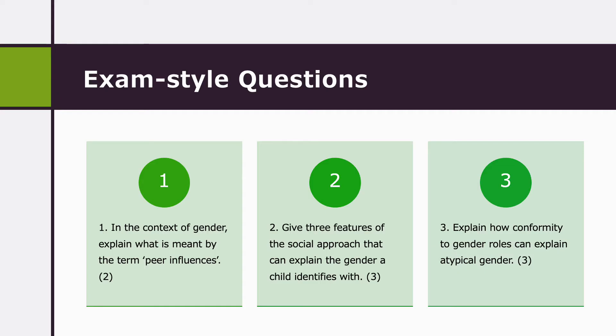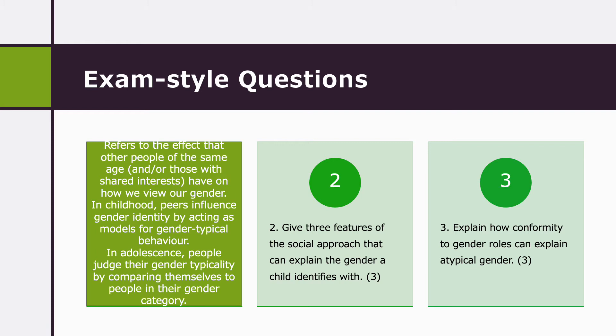Last lesson I asked you to complete three questions. We're going to go through and mark them. Question one was: in the context of gender, explain what is meant by the term peer influences. Peer influences refers to the effects that other people of the same age have on how we view our gender. Peers influence gender identity by acting as models for gender-typical behaviour. Or in adolescence: people judge their gender typicality by comparing themselves to people in their gender category.